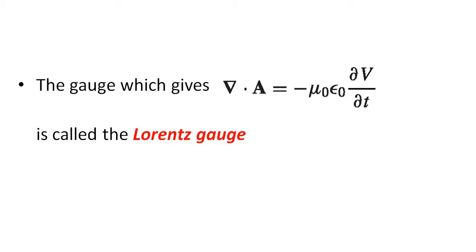But in the case of Lorentz gauge, del dot A is equal to minus mu-zero epsilon-zero partial V by partial t. The gauge which gives del dot A equal to minus mu-zero epsilon-zero partial V by partial t is called the Lorentz gauge.